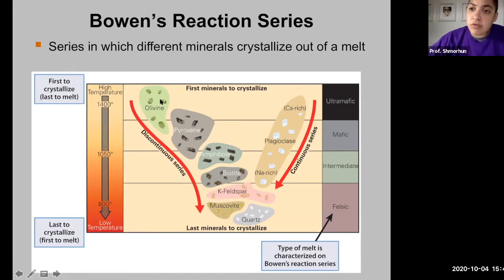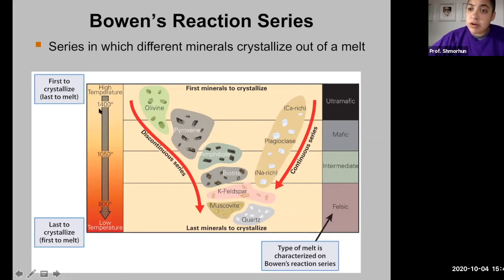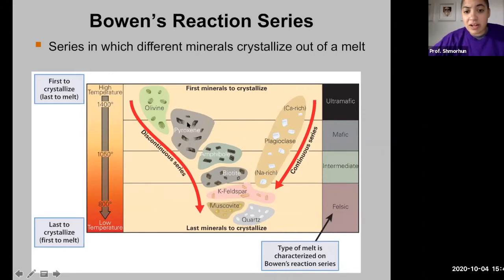Olivine is the first mineral that will crystallize out of a melt. If we have a magmatic body deep inside the earth at approximately 1400 degrees, olivine would begin to crystallize. As we continue to cool this melt, olivine would continue to crystallize, and then pyroxene would begin to crystallize, followed by amphibole and biotite.